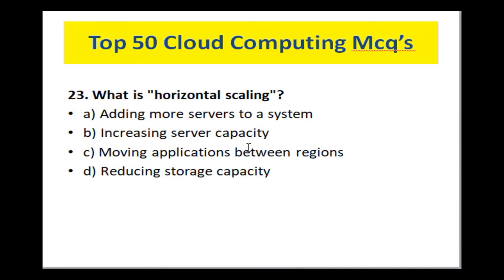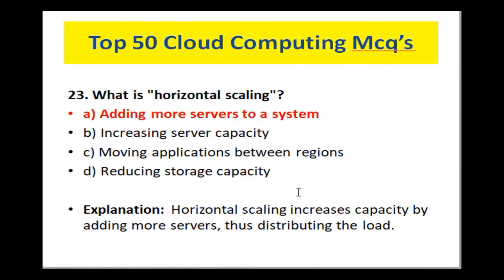What is horizontal scaling? Options are: adding more servers to a system, increasing server capacity, moving applications between regions, and reducing storage. In horizontal scaling, instead of adding more resources to an existing server, we add more servers to the system itself. The load is then distributed among multiple servers — that is horizontal scaling.